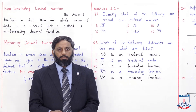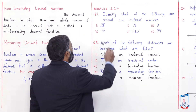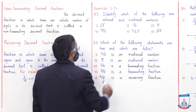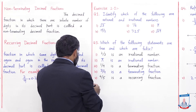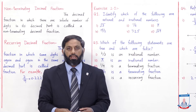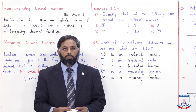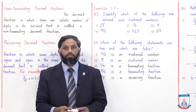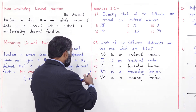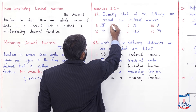Exercise 2.1 start کرتے ہیں۔ Question 1: identify which of the following are rational and irrational numbers. پہلا part: √3 — اگر آپ اسے solve کریں تو remainder کبھی 0 نہیں آئے گا، decimal part میں digits infinite ہوں گے۔ √3 کو p over q کی form میں نہیں لکھ سکتے، لہذا یہ irrational number ہے۔